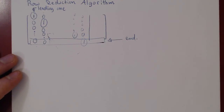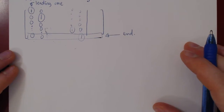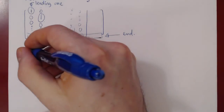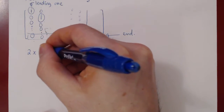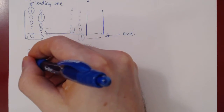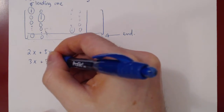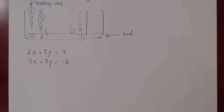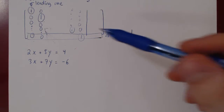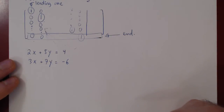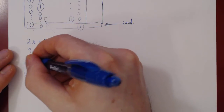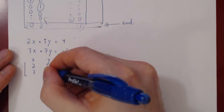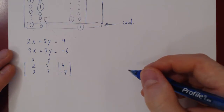That's basically row reduction. Let's do a simple example with 2 equations and 2 unknowns — this will be an example of Gaussian elimination using backwards substitution. Suppose we have 2x + 5y = 4 and 3x + 7y = -6. We want to solve this system using the augmented matrix, elementary row operations, and the row reduction algorithm. First, we construct our augmented matrix, and then we apply the algorithm.